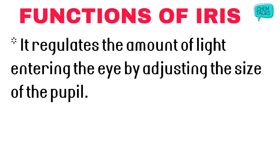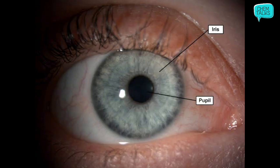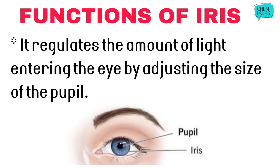Talking about the second function of the iris: it regulates the amount of light entering the eye by adjusting the size of the pupil. Who decides how much light enters our eyes? The iris decides, by adjusting the size of the pupil. Here in this diagram you can see the iris — the light blue color of the eye is the color of the iris — and in the center, there is a dark black circular opening. That is the pupil. The iris adjusts whether the size of the pupil is small or large depending on how much light is needed.